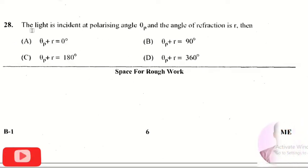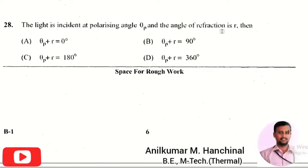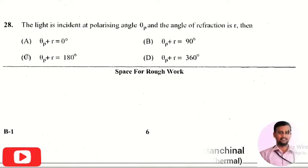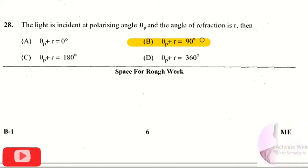The next question is: light is incident at polarizing angle theta p, and the angle of reflection is r. The question asks for the relation between theta p and r. The right answer is option 2, that is theta p plus r equals 90 degrees. So the polarizing angle and the angle of reflection will sum to 90 degrees.